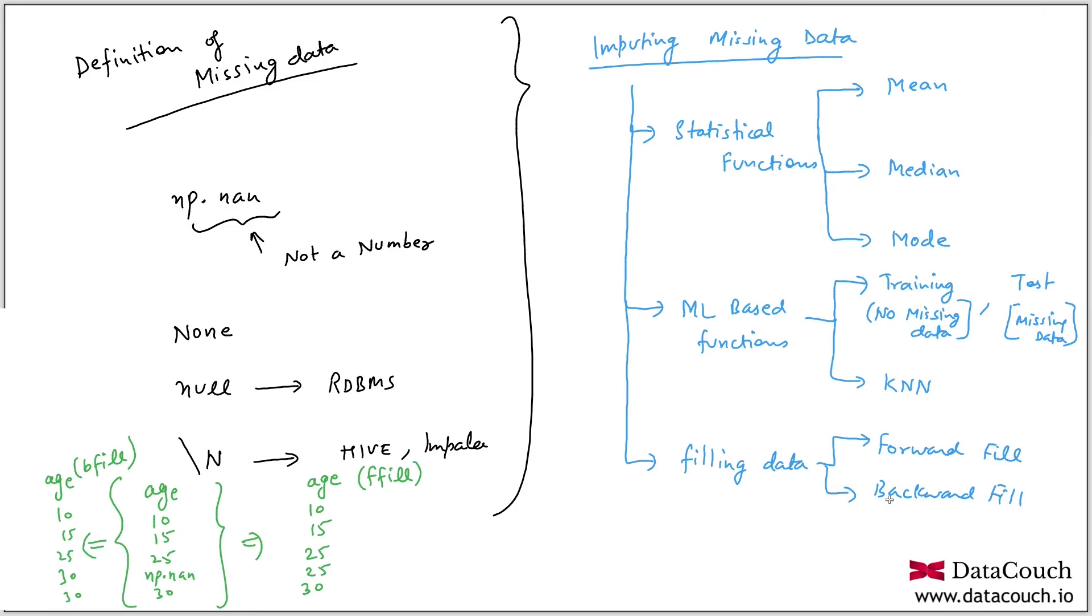Now which one is the best one? Actually, I would say imputation of missing data is highly based on your domain. Domain knowledge is very important when it comes to missing data handling. Domain expertise is very important.